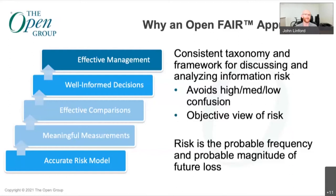This means you get numbers — it's quantitative. You're not talking in terms of high, medium, or low, because what's high risk to one person may be low risk to another. It also avoids issues with well-defined bands: if you've got one risk at ten million dollars at the boundary between medium and low, is it medium or low? Open FAIR avoids that confusion.